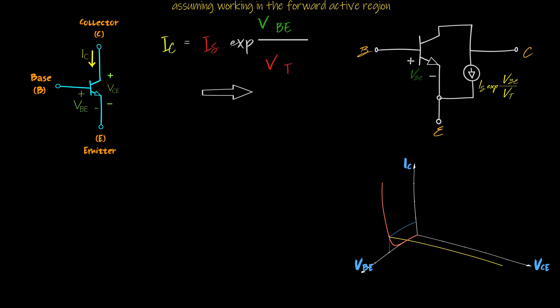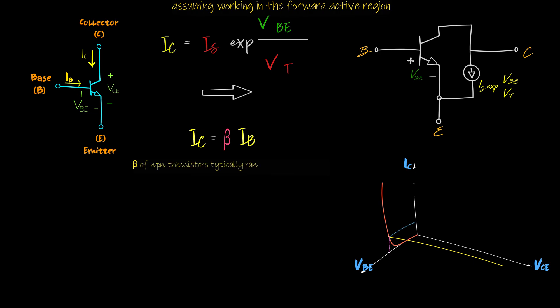Not only that, there is a small amount of current that flows from the base to emitter — the base current. The relationship between the base current and the collector current is linear. The collector current is a scaled version of the base current. Beta is called the current gain, implying that the collector current is an amplified version of the base current.